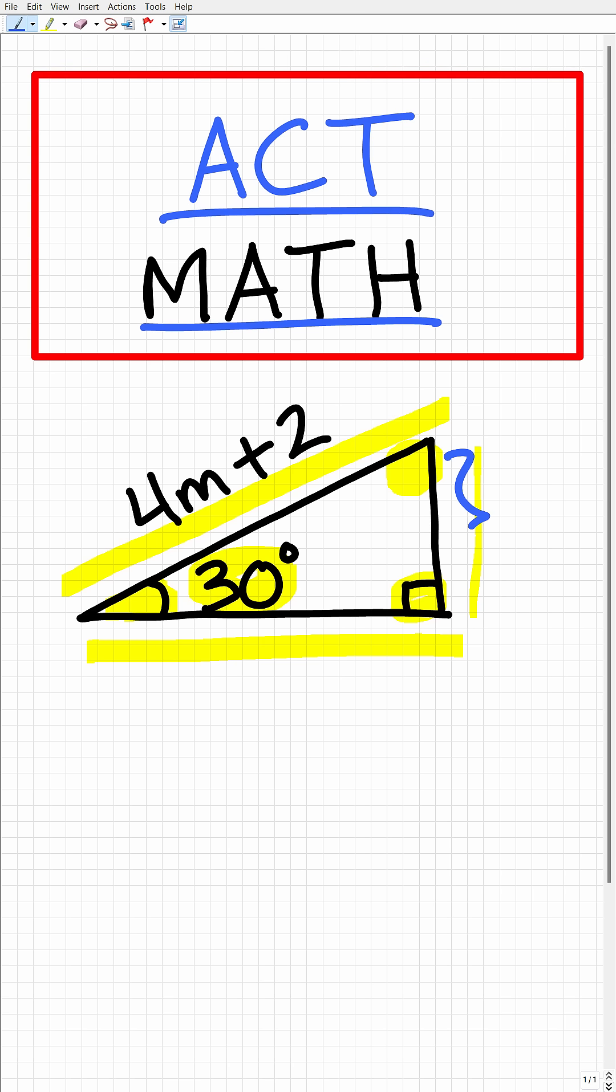All right, so we have this shorter side and this medium side right here of this 30, 60, 90 special right triangle. All right, so again, this should be very easy for you to answer, but let's just quickly review the special properties of a 30, 60, 90 special right triangle.